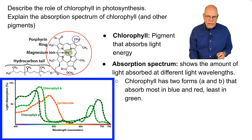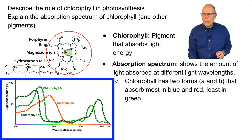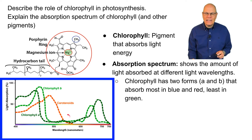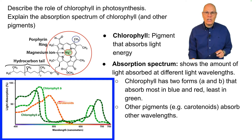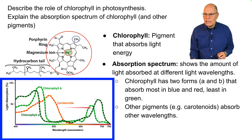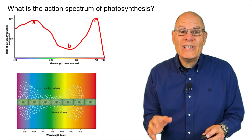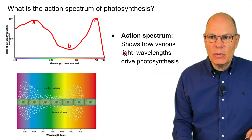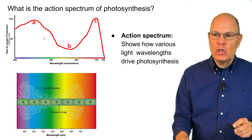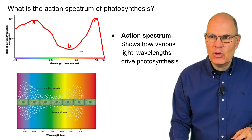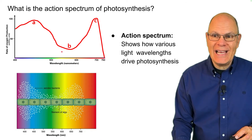Chlorophyll has two forms, differing based on a functional group: chlorophyll B and chlorophyll A. Both absorb most energy in the blue and red parts of the spectrum, but very little in the green part. That's why leaves are green — they reflect green light while absorbing other wavelengths. Other pigments, called carotenoids, also participate in photosynthesis and absorb other wavelengths. The action spectrum shows how various light wavelengths drive photosynthesis — blue and red drive the most, while green drives very little.